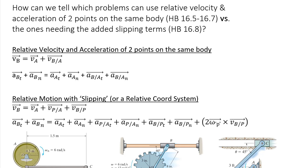And as we're transitioning now into the most complex equations of the chapter, which is out of section 16.8 of the Hibler textbook, which essentially adds some additional relative terms, including the Coriolis as one of the acceleration terms. A really good question to answer at this point is: when do we need to use this stuff? Or more precisely, how can we tell which problems can use relative velocity and acceleration of two points on the same body — which comes out of Hibler section 16.5 and 16.7 — versus the equations needed with the added slipping terms from section 16.8?